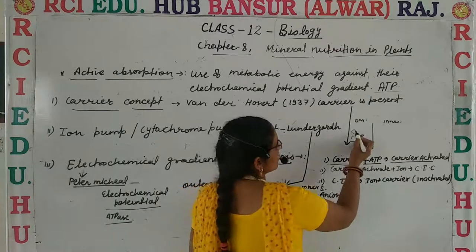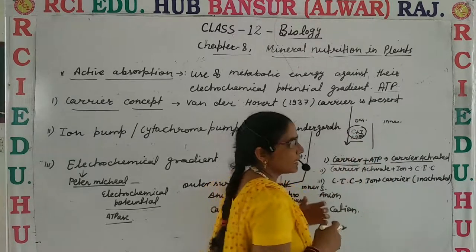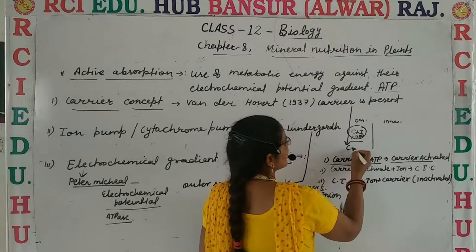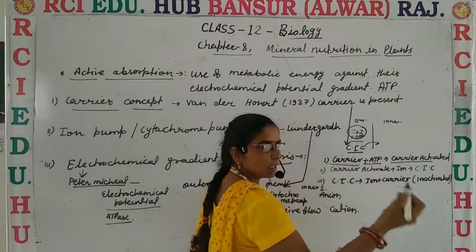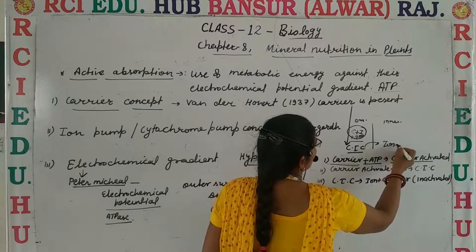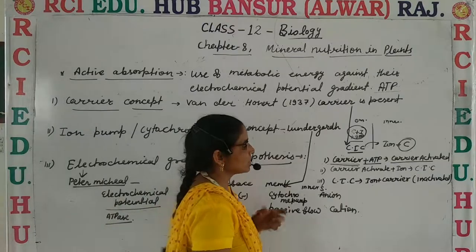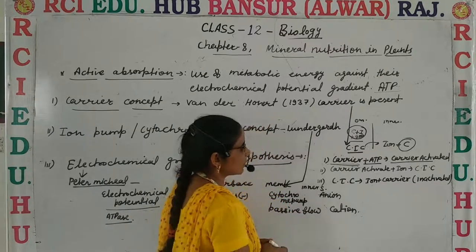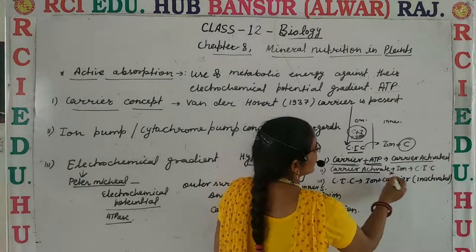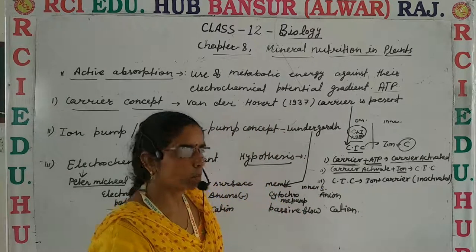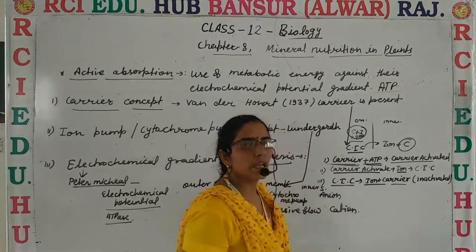When the carrier becomes activated, it combines with an ion — it may be an anion or a cation. When the carrier combines with the ion, it forms a carrier-ion complex. This complex moves through the membrane and releases the ion on the other side, and the carrier becomes inactivated again. So the three steps are: carrier combines with ATP and activates; activated carrier combines with ion to form carrier-ion complex; the complex moves to the inner surface, releases the ion, and the carrier becomes inactivated.